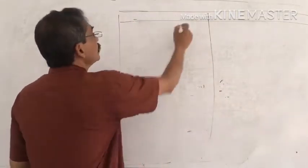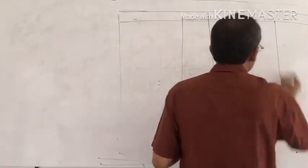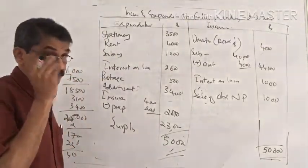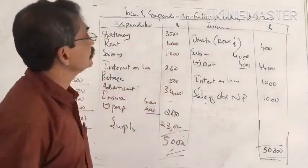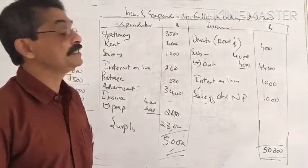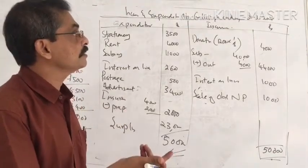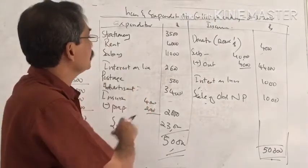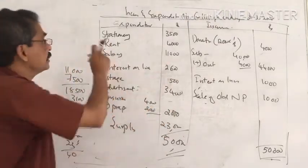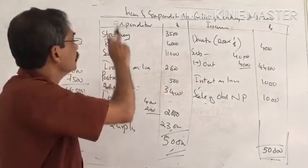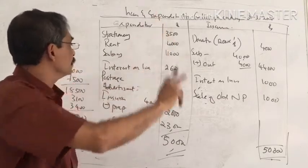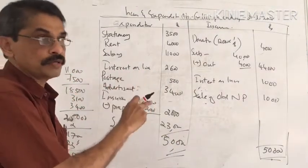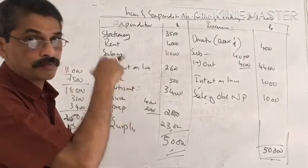Now we will prepare the Income and Expenditure account. The Income and Expenditure account is for the year ending 31st March 2018. We will record all revenues and expenditures for the year, applying the relevant adjustments. We will also prepare an opening balance sheet and a closing balance sheet.